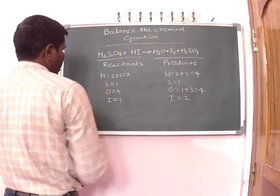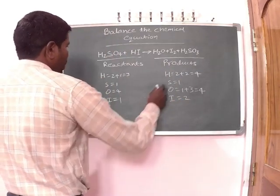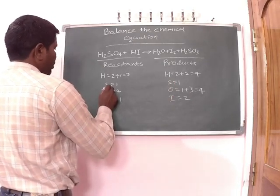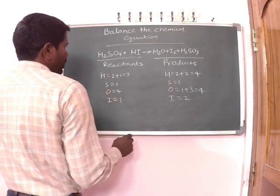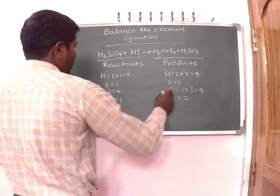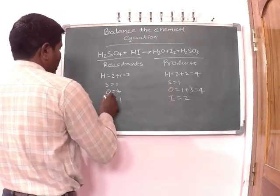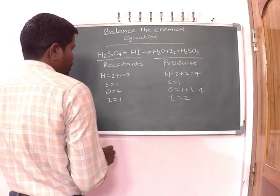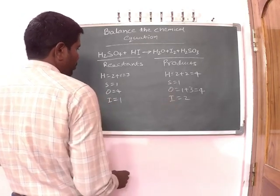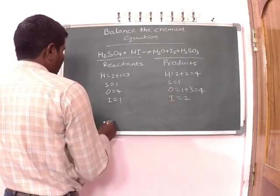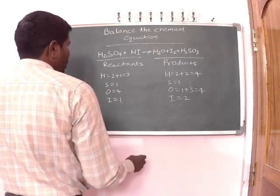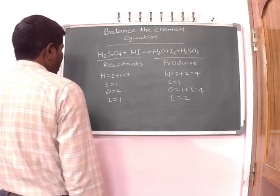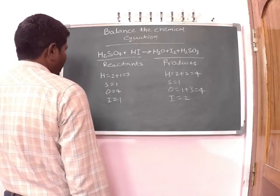So in the reactants side, the number of hydrogen atoms is 3, and in the products side, the number of hydrogen atoms is 4. The number of sulfur atoms is 1 on both sides. The number of oxygen atoms is 4 on both sides. In the reactants side, the number of iodine atoms is 1, and in the products side, the number of iodine atoms is 2.